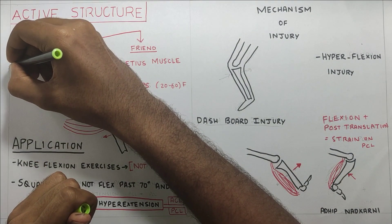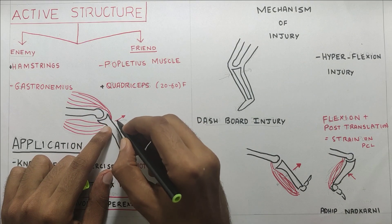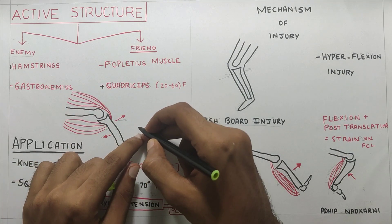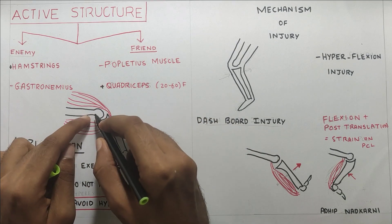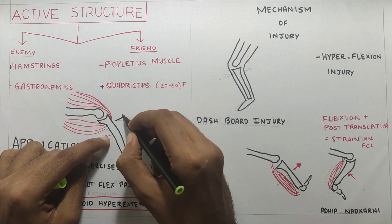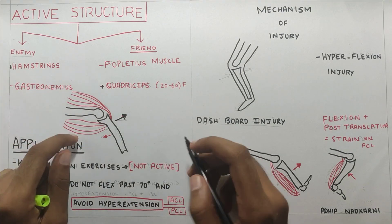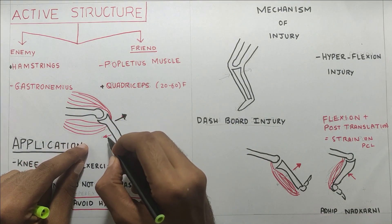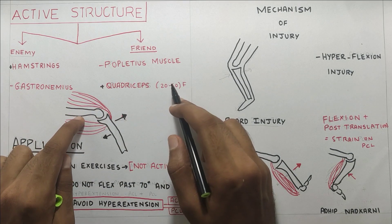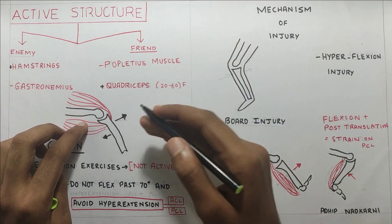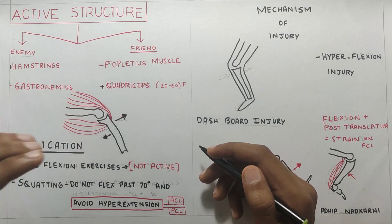Understanding hamstrings and quadriceps is straightforward. When quadriceps contracts, the tibia moves forward and due to the concave-convex rule — when there is a concave surface moving on a convex surface, the glide and the roll will be in the same direction. Whereas when the hamstring is working it is exactly the opposite, the tibia will be moving posteriorly. Hence quadriceps causes anterior translation and hamstring causes posterior translation, straining the ligament.